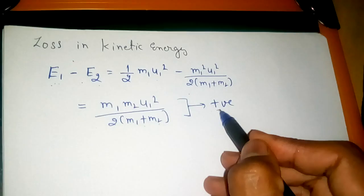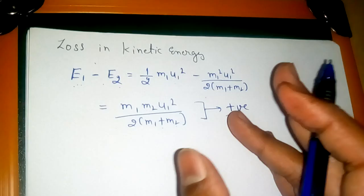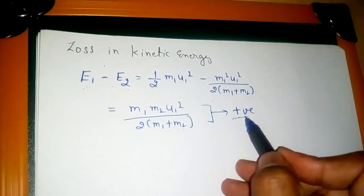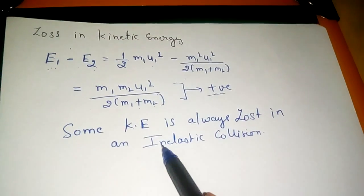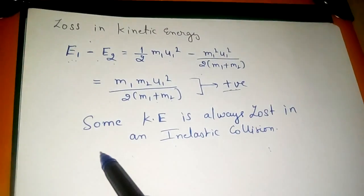You can clearly see that this equation or the final formula is positive, which proves that there is always some loss in kinetic energy whether it is less or more, but it is always positive. Some kinetic energy is always lost in an inelastic collision.